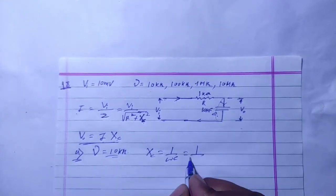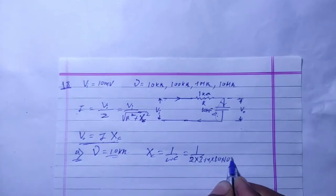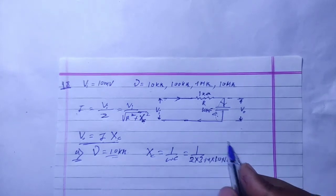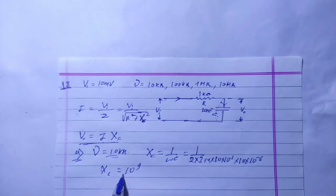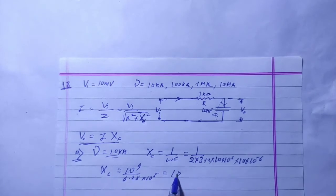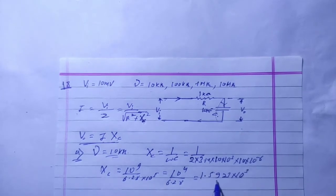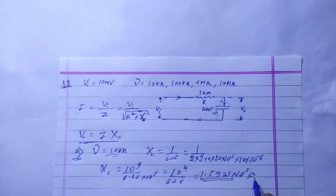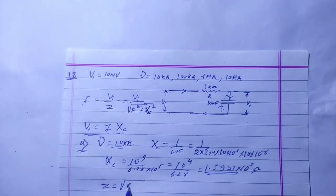For 10 kHz, frequency is 10 into 10 to the power 3. The capacitance C is 10 microfarad, i.e., 10 into 10 to the power minus 6. XC equals 1 upon omega C, which gives 10 to the power 9 upon 6.28 into 10 to the power 5, resulting in XC equal to 1.5923 into 10 to the power 3 ohms — that is the capacitive reactance. Then we find Z: Z equals root of R squared plus XC squared.